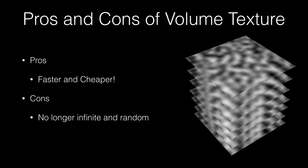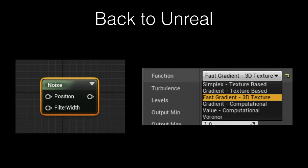However, we can hide the tiling pattern by using octaves that don't align with each other. The cool thing about Unreal is it has this noise node, which has the fast gradient 3D texture built right into it. If you select fast gradient 3D texture, you're sampling the Perlin noise volume texture instead of doing all of that math and texture samples. Let's jump over to Unreal and take a look at what this looks like in practice.